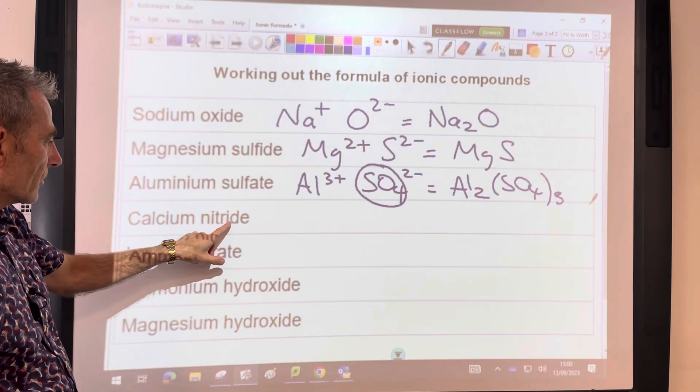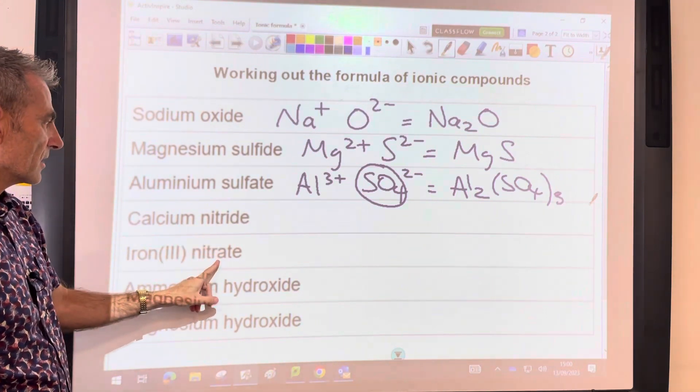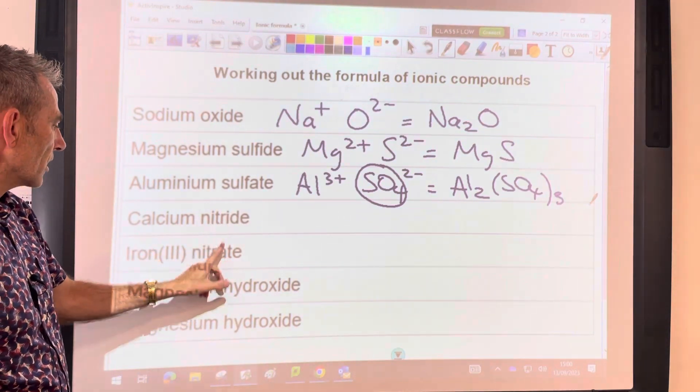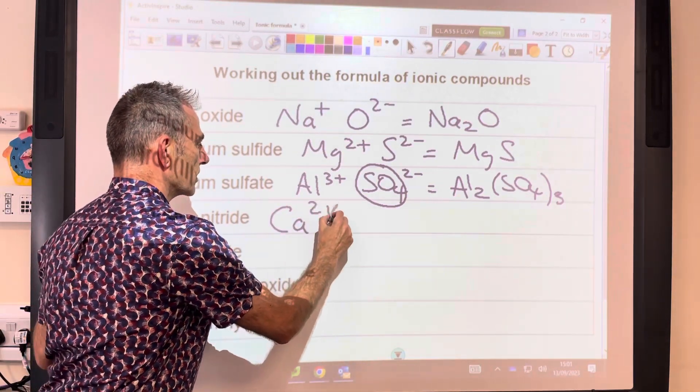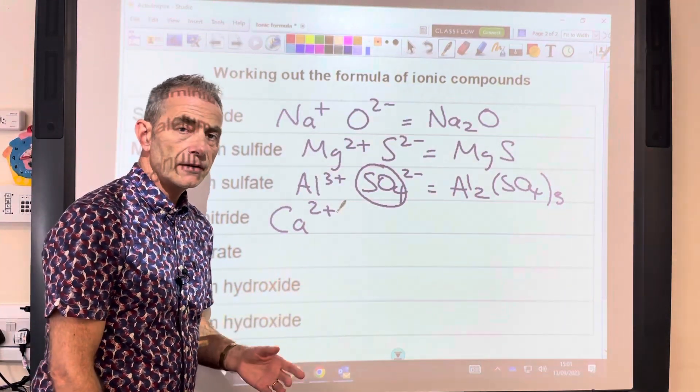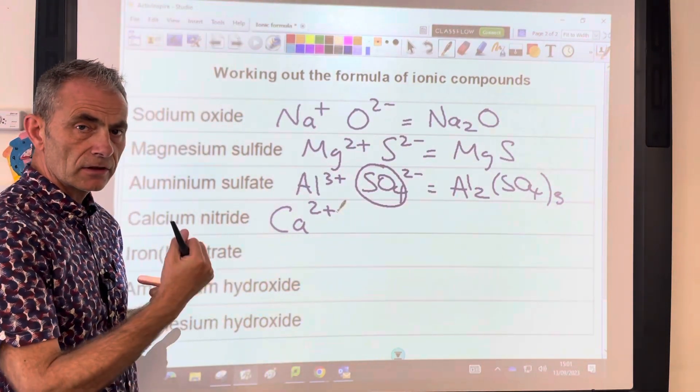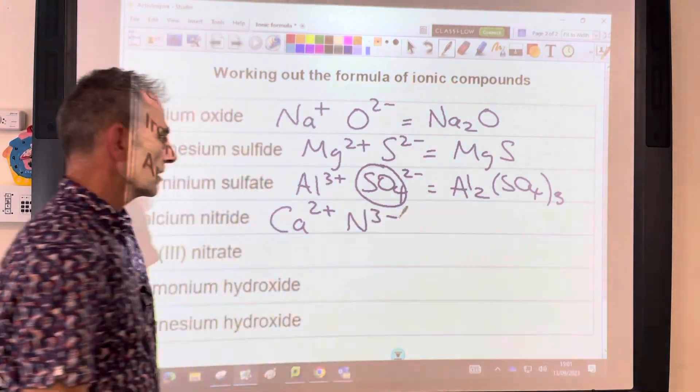Another example where you've got very similar sounding things, just to make a point of what's the difference between the two. We've got nitride and nitrate here. Calcium nitride contains the calcium ion, so that's just Ca2+. Nitrogen is in group 5, so it's going to gain 3 electrons and become 3 minus. So N3- is the ion.